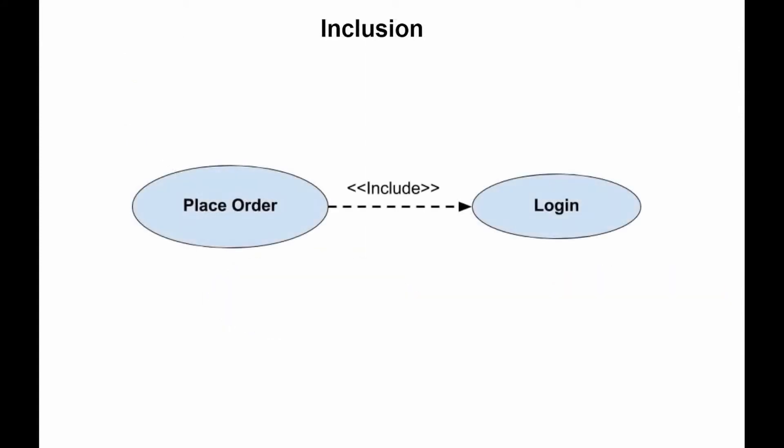When one use case is shown using the functionality of another use case, the relationship between them is indicated by their include stereotype. This type of relationship means that an instance of the base use case will include the behavior as specified in the child use case and it is indicated by a dashed arrow with its tip pointing to the child use case.